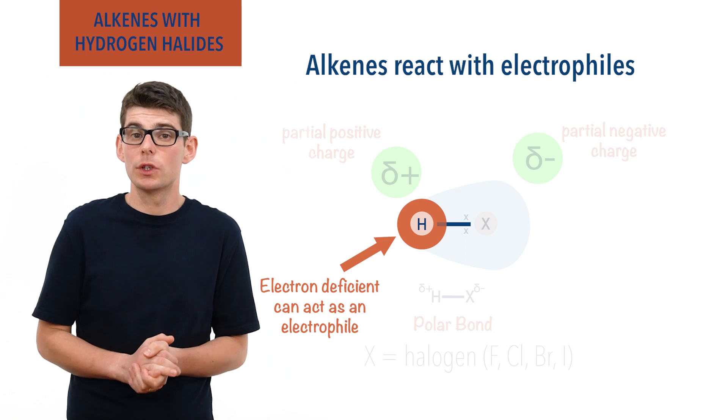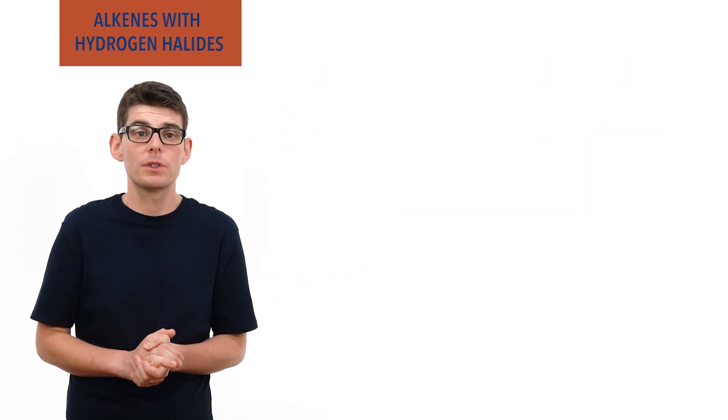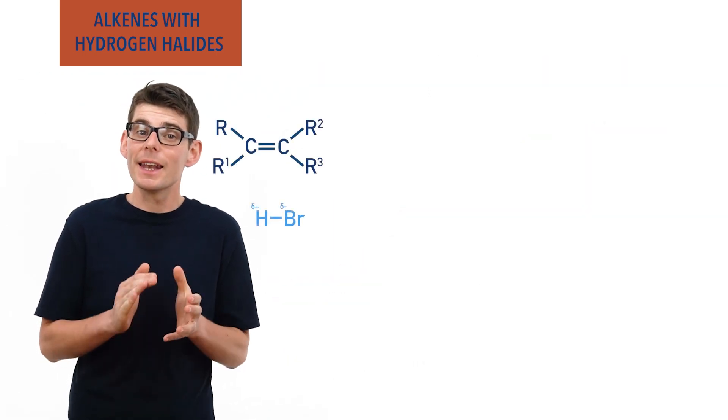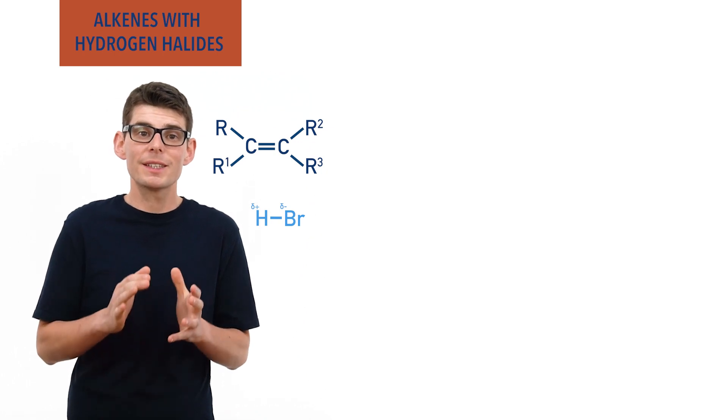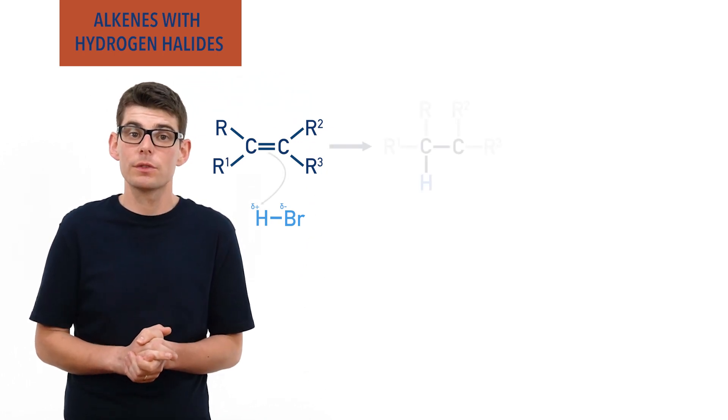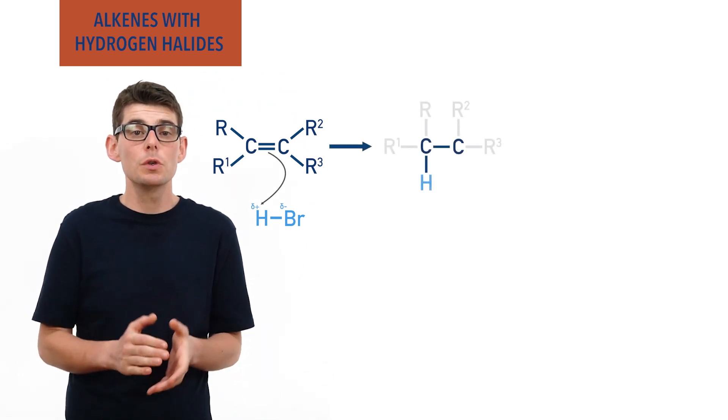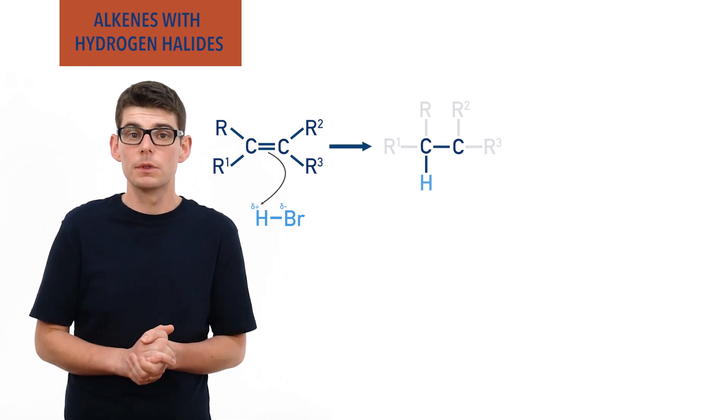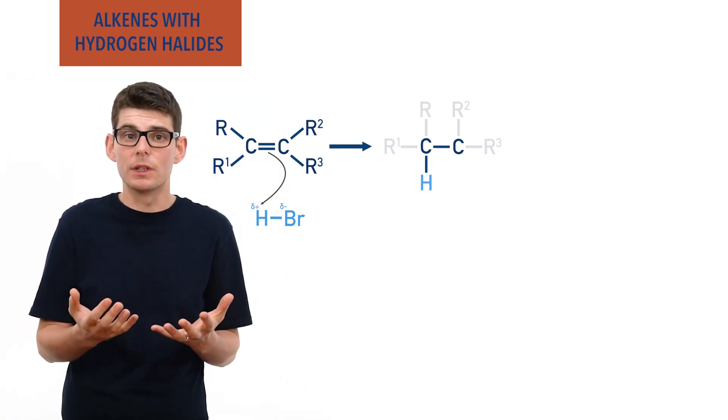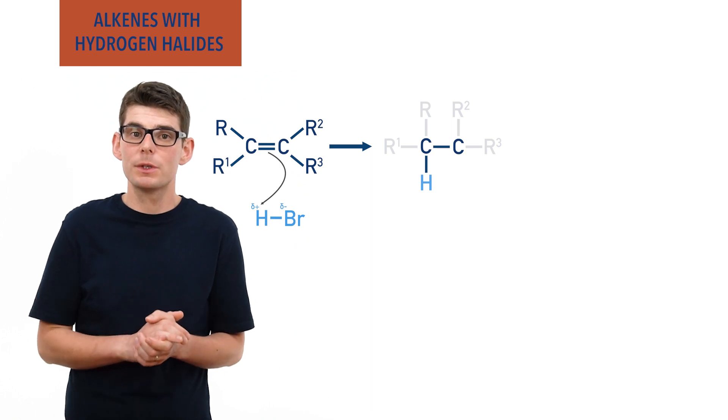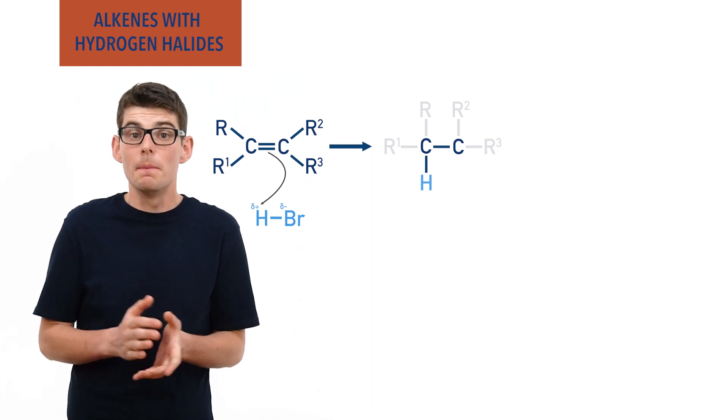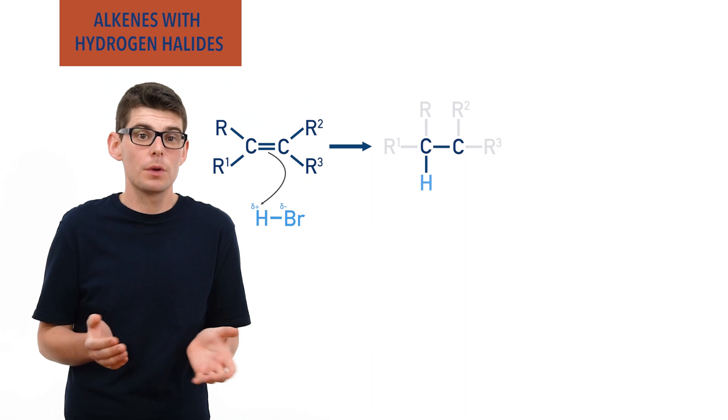As a hydrogen halide molecule approaches the carbon-carbon double bond in an alkene, the electron deficient hydrogen will accept the pi bond electrons from the double bond and form a new bond to one of the carbon atoms. This breaks open the double bond and a single sigma bond gets left between the two carbon atoms, meaning the carbon chain doesn't get broken.